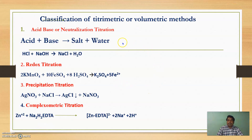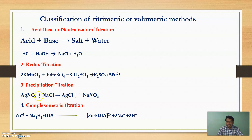Volumetric or Titrimetric Methods are classified as: Acid-Base or Neutralization Titration, where Acid plus Base gives Salt plus Water — for example, HCl plus NaOH gives NaCl as salt and water. The second type is Redox Titration, that is Oxidation-Reduction Titration, involving oxidizing agents and reducing agents. The third type is Precipitation Titration, where Silver Nitrate reacts with NaCl to give Silver Chloride and Sodium Nitrate, which are insoluble in water, obtained as a precipitate.